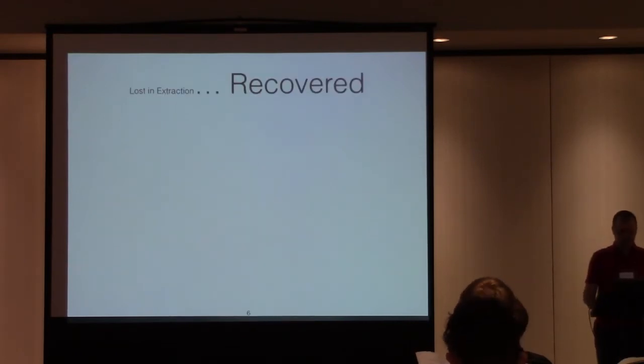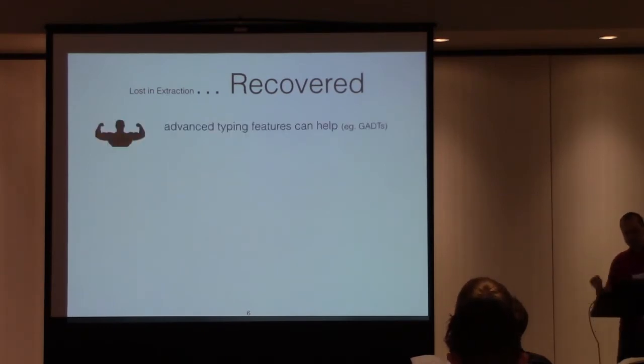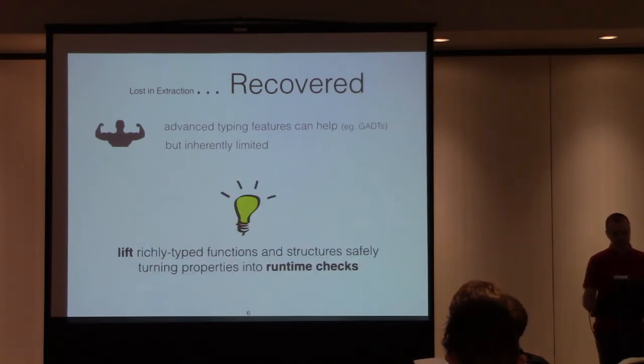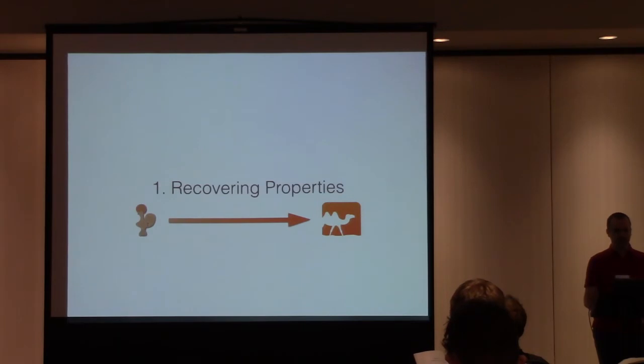So what you could do to recover what's lost in extraction is basically to say, we could make the extraction smarter and exploit more of what the type system of the target language has. But in OCaml, we could at least go to GADTs and then try to do certain things better. But you'll agree that it's inherently limited unless your target language is just Coq. So what we are proposing is instead of pushing this route, which is also interesting, is to say, okay, maybe we can just lift those richly, properties and type dependencies, functions and structure safely by turning those things into runtime checks. So that's related to the safe wrappers that Nick was mentioning in his talk. So I'll now show you in two steps how we do that. First, focusing on the properties for subset types, basically, and second step for type dependencies, so the indices stuff.